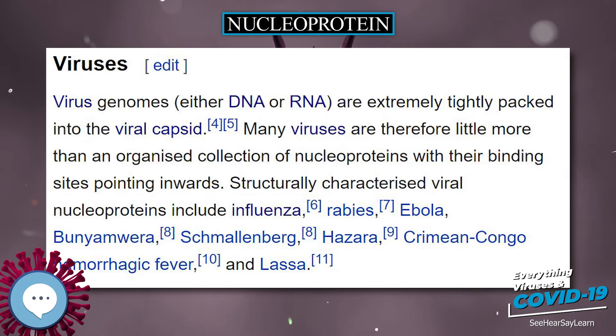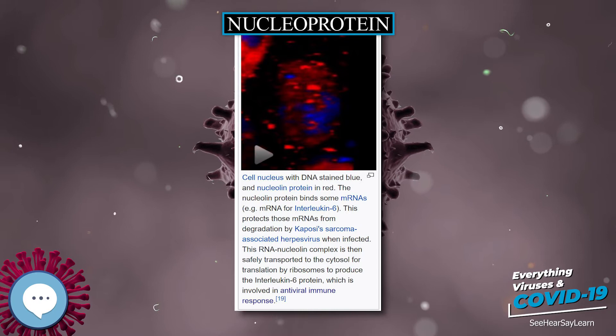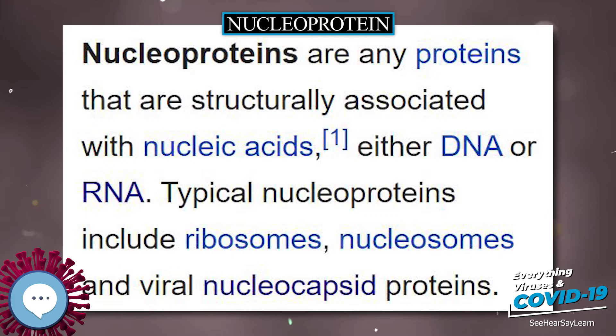Deoxyribonucleoproteins. A deoxyribonucleoprotein, DNP, is a complex of DNA and protein. The prototypical examples are nucleosomes, complexes in which genomic DNA is wrapped around clusters of eight histone proteins in eukaryotic cell nuclei to form chromatin. Protamines replace histones during spermatogenesis.